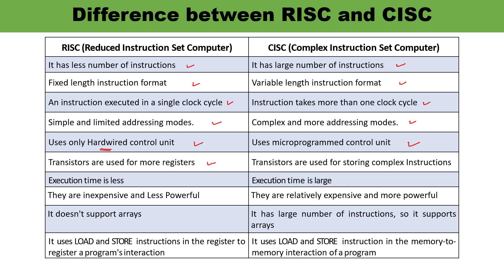Transistors are used for more registers in the case of RISC, while transistors are used to store complex instructions when talking about CISC architecture.